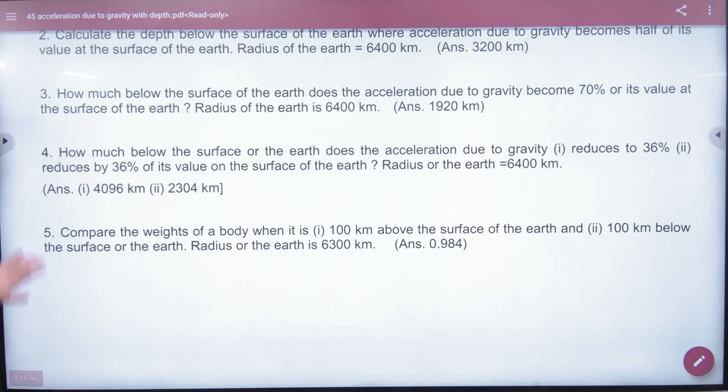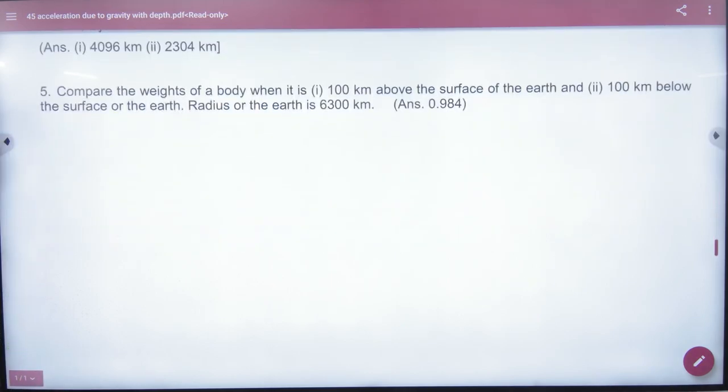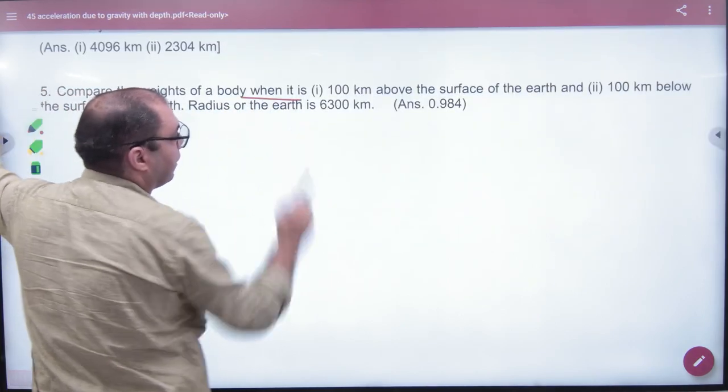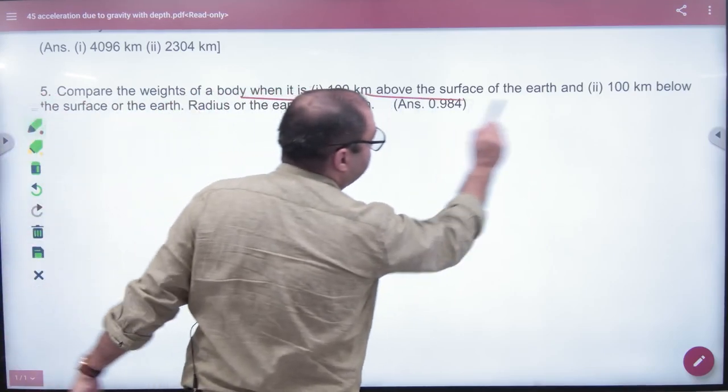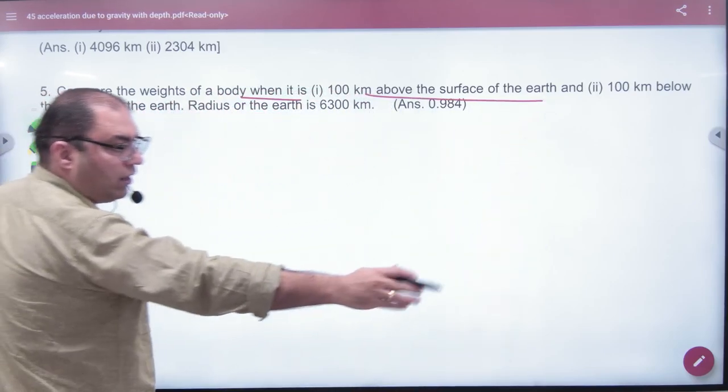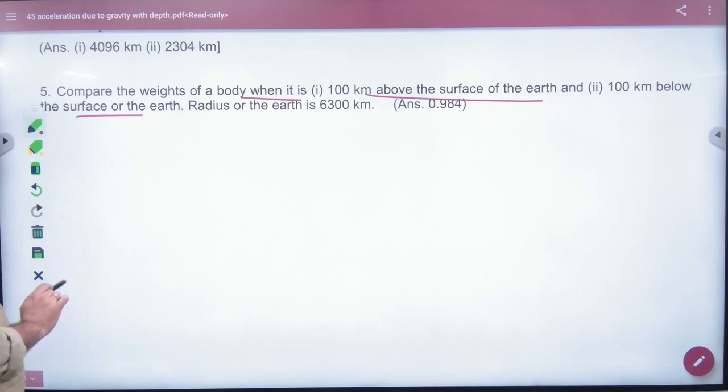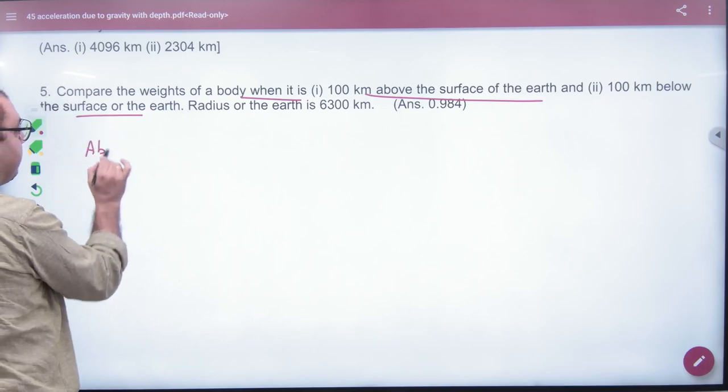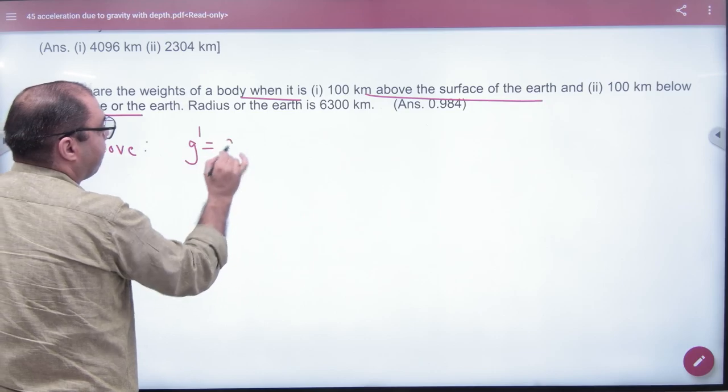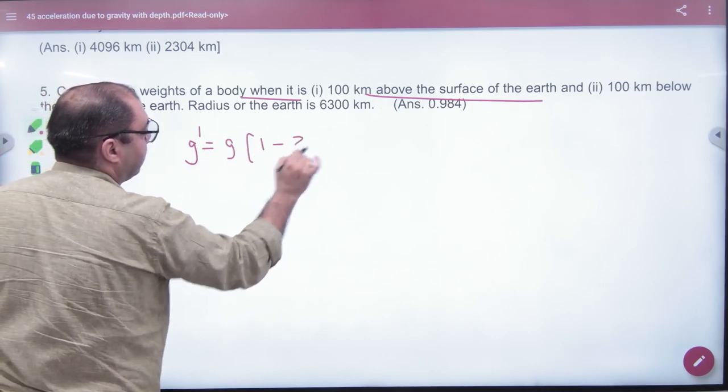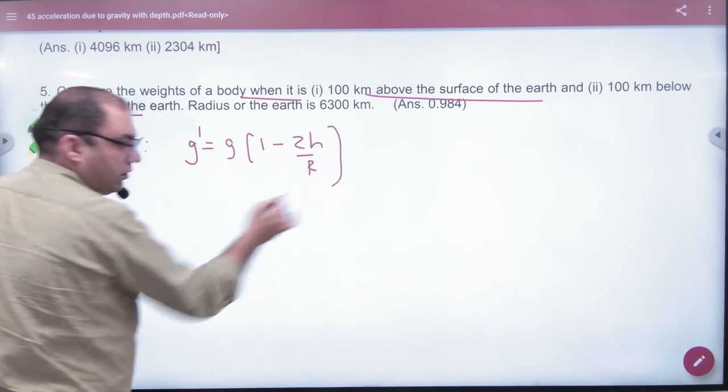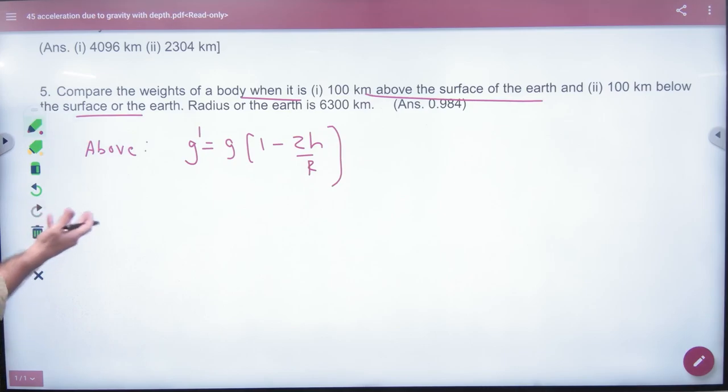Next, compare the weights of a body 100 km above the surface of the earth and 100 km below the surface. First case: above. Above, the g' formula is g(1 - 2h/R). Because 100 km is a large value, we use the shortcut formula.